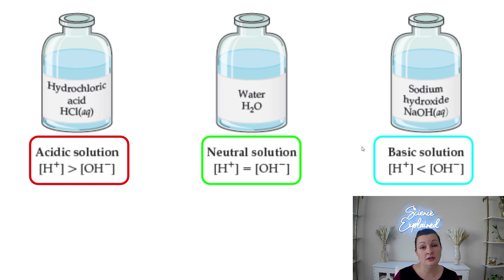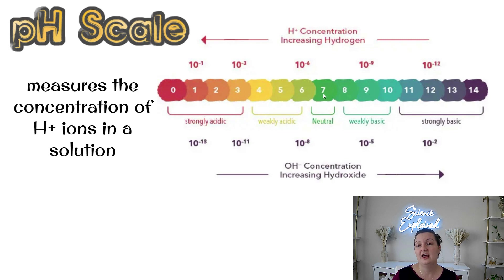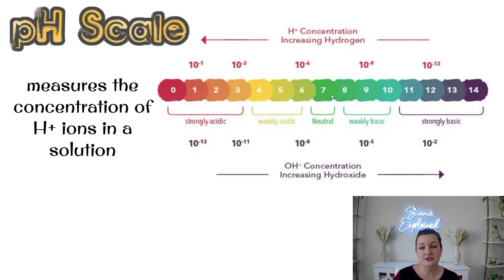If it's basic or alkaline, you're going to have more of that OH negative than you do of the H positive. The pH scale ranges from zero to 14. Seven is going to be neutral. Anything below seven is acidic — so zero to 6.9 — and anything above seven, which is 7.1 to 14, is basic or alkaline.